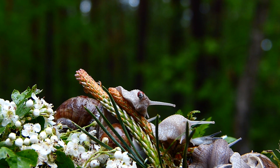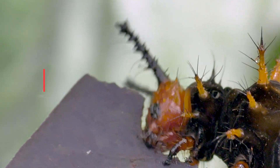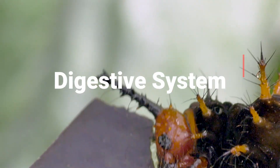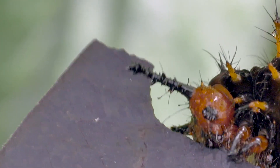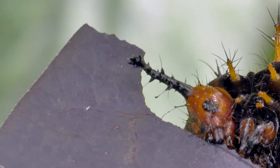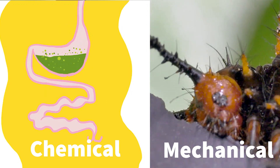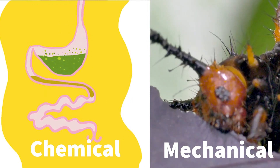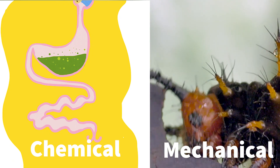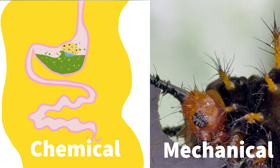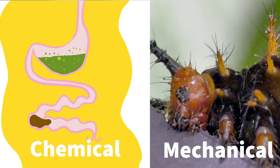The first organ system we'll be covering is the digestive system, which is responsible for the breakdown of food into simple nutrients. The process of digestion can be broken down into two categories: mechanical digestion, the physical breakdown of food through things like chewing and palpating, and chemical digestion, in which enzymes chemically dissociate food.